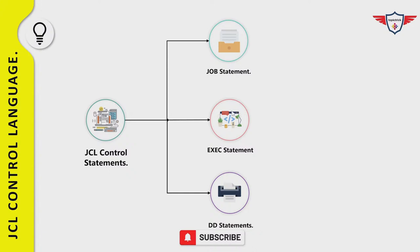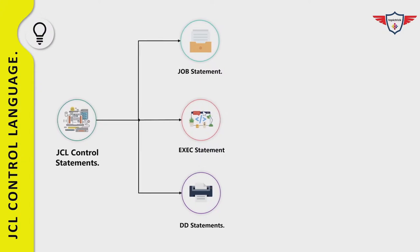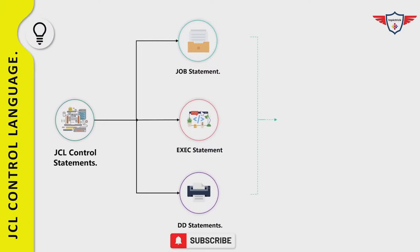The first is the job statement. A job statement marks the beginning of a job and is used to provide vital information related to your shop. The second statement is the execute statement, which marks the beginning of a job step and is used to provide the program name or proc that you want to execute. The third statement is the Data Definition statement, or DD statement, which is used to provide information related to input and output datasets.